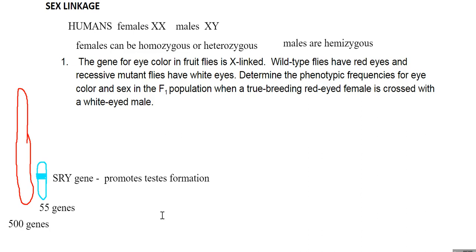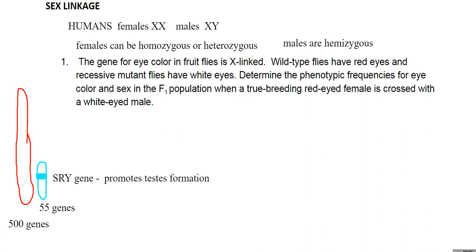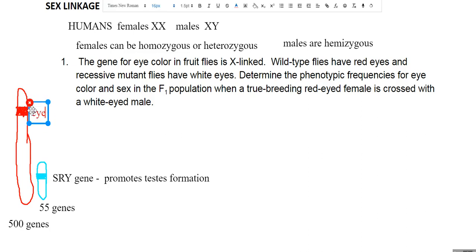Now that we know the difference between X and Y chromosomes, we're going to look at some sex-linked inheritance patterns using fruit flies. Fruit flies also have X and Y chromosomes, and the X chromosome is much larger than the Y. We're going to look at a gene for eye color, whose locus is on the X chromosome. Notice that there is no corresponding gene on the Y chromosome — so it is X-linked.